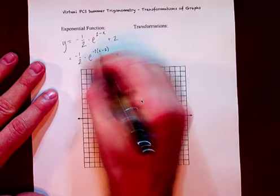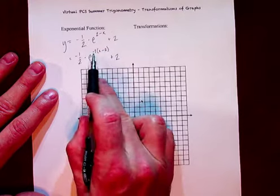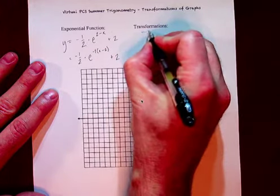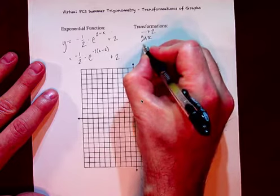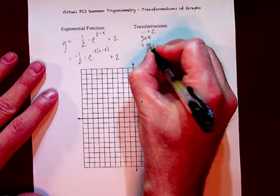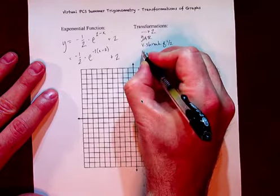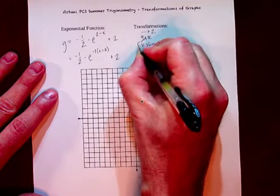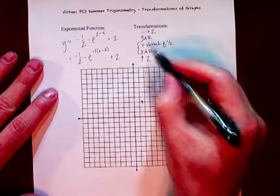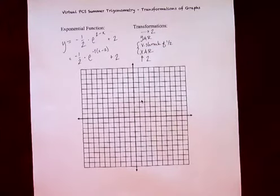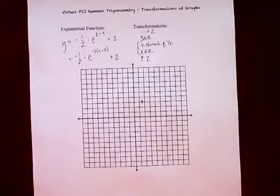Now in terms of order of operations it goes one, two, three, four, five. So it moves to the right two. We have a y-axis reflection — which is not really a y-axis reflection, but we'll get to that. We have a vertical shrink of one half. We have an x-axis reflection, and those two can go in either order. And then we're going to go up two. Those two can go in either order because multiplication is commutative.